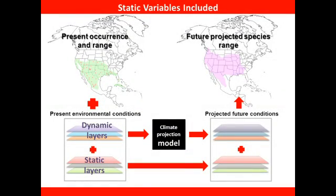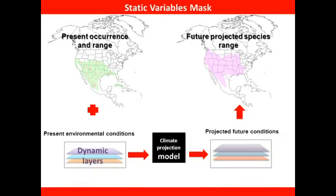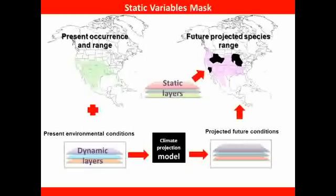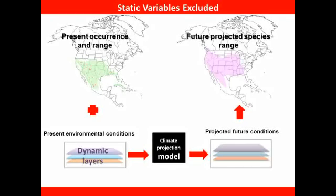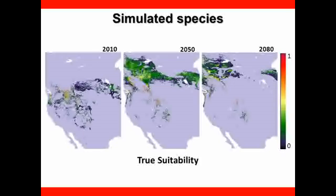In our paper, we explore methods for using both static and dynamic variables in species distribution modeling. What we wanted to know was if it was better to include the static variables directly in the model along with the dynamic variables, start with a climate-only model and use the static variables as a mask to exclude areas that are known to be unsuitable due to non-climatic factors, or perhaps it's best to exclude static variables from the model altogether and simply rely on bioclimate envelope type predictions. In order to evaluate these three different approaches as realistically as possible, we created simulated species to evaluate the different modeling approaches against the simulated true distribution.